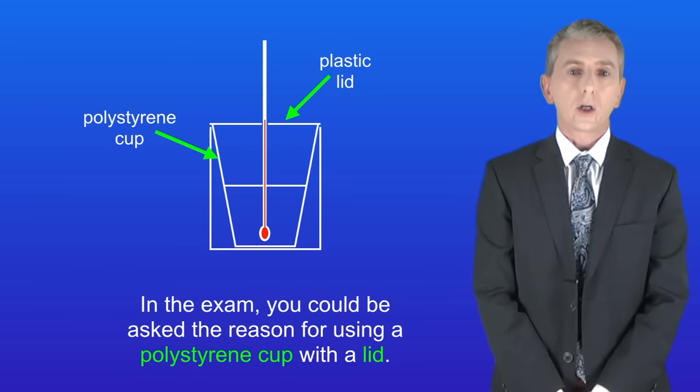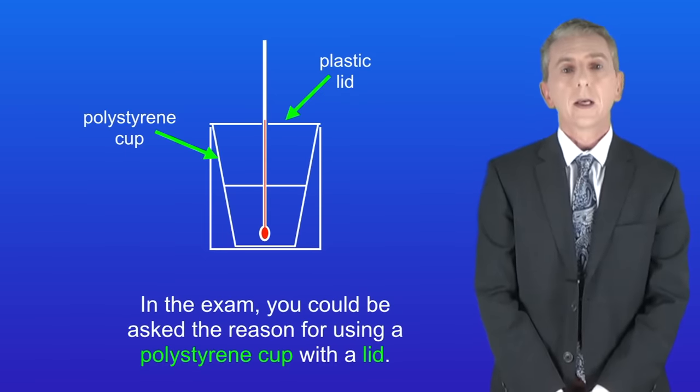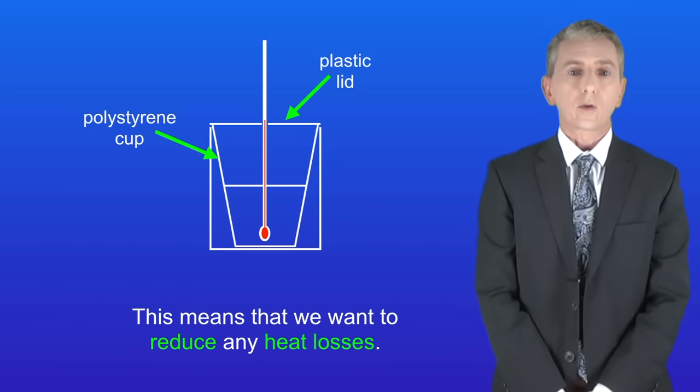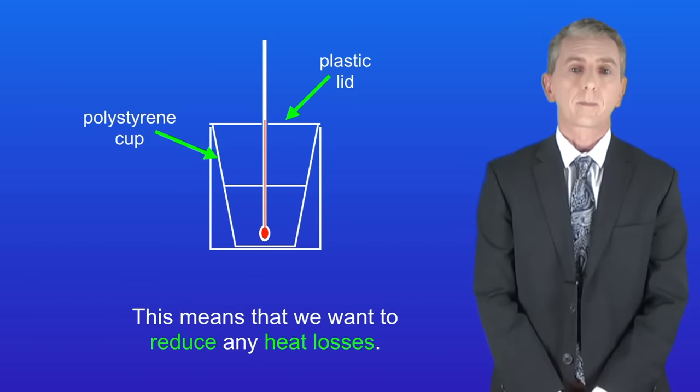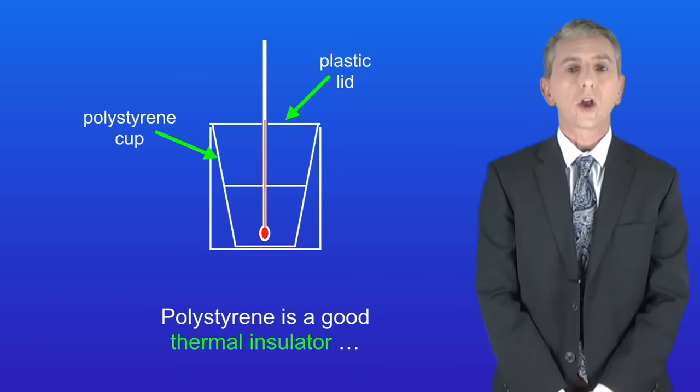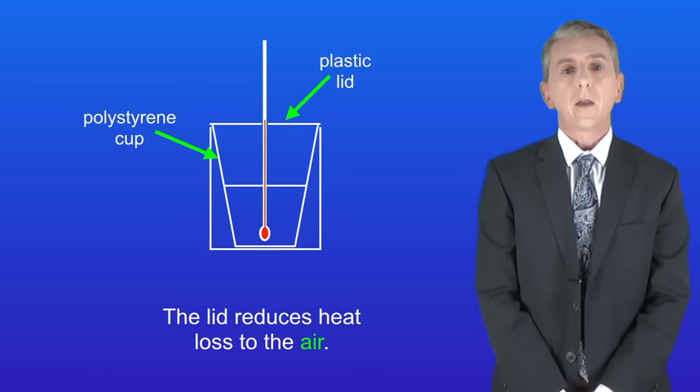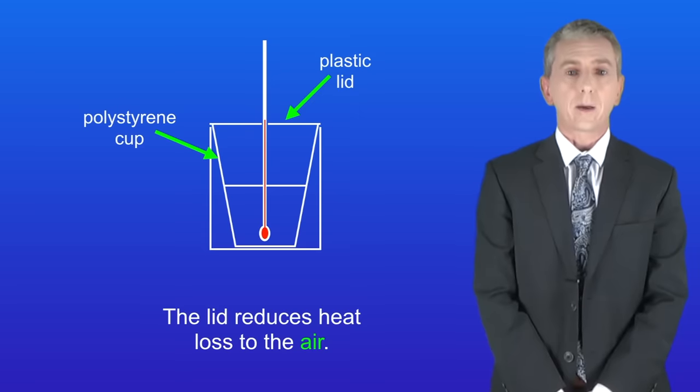Now in the exam you could be asked the reason for using a polystyrene cup with a lid. In this experiment we're measuring the temperature. This means that we want to reduce any heat losses. Polystyrene is a good thermal insulator so this reduces heat loss through the sides and the bottom. And the lid reduces heat loss to the air.